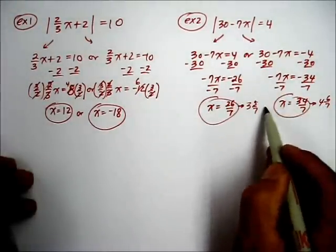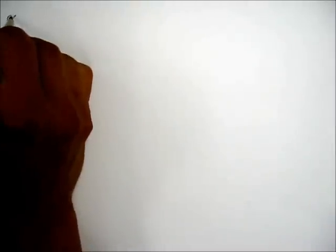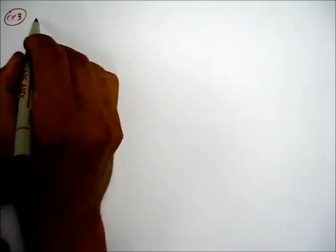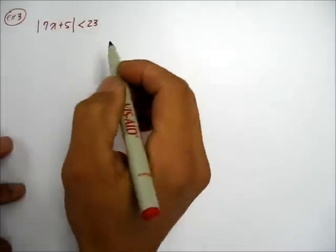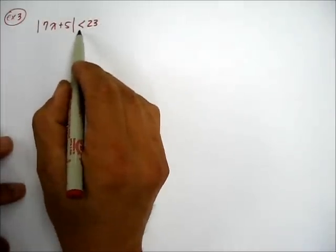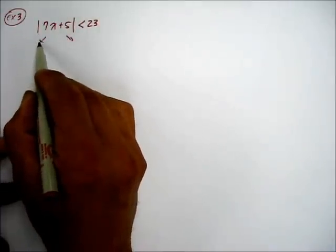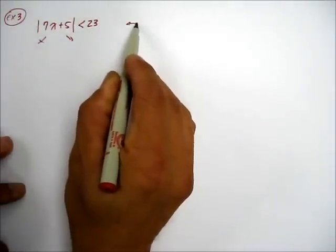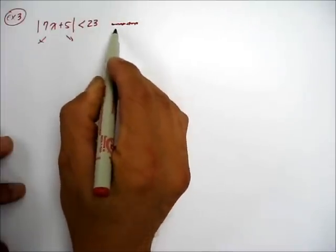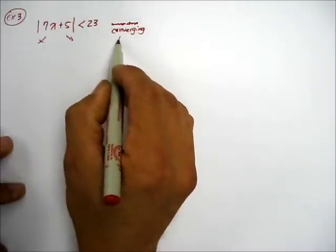Those are the two possible answers that will make this absolute value true. Now let's take a look at absolute value inequalities. For example, absolute value of 7x + 5 is less than 23. Think about this: when something is less than 23, the other possible solution is to be greater than -23. So we're going to have a converging situation, and when two lines converge, we're going to have an 'and' situation.